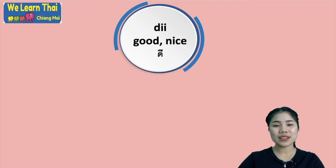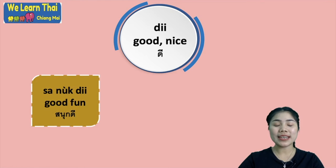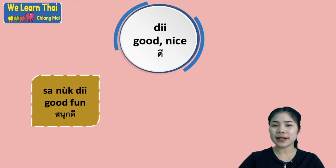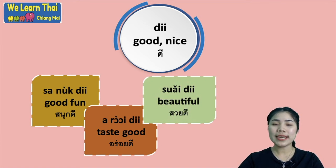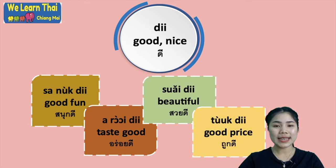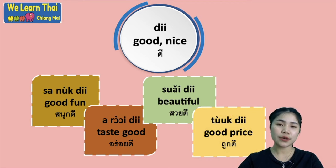And next, we have the word ดี — it means good or nice. You can use the word ดี with adjectives. สนุกดี — good fun. Or อร่อยดี — tastes good, like delicious. สวยดี — beautiful. ถูกดี — good price.